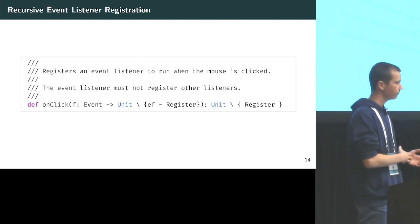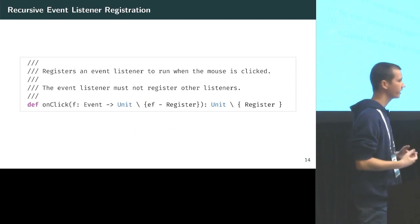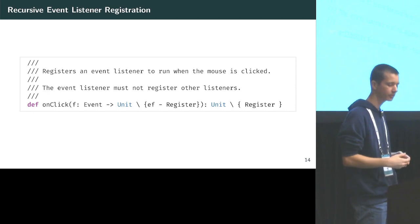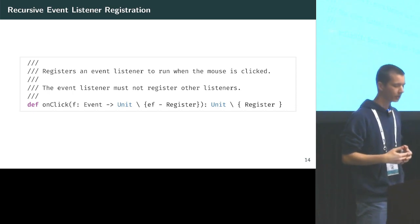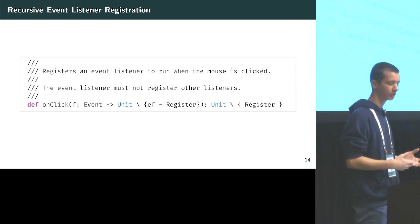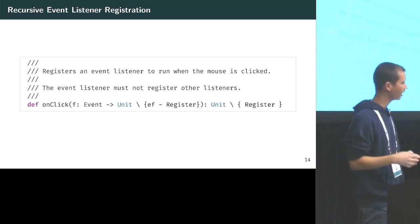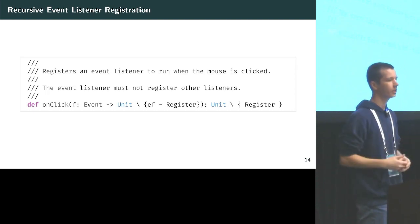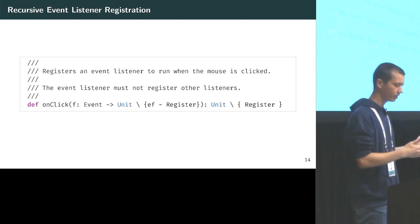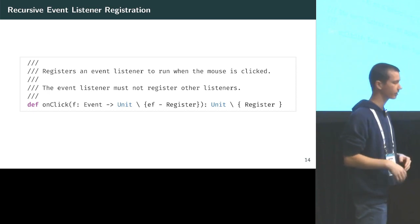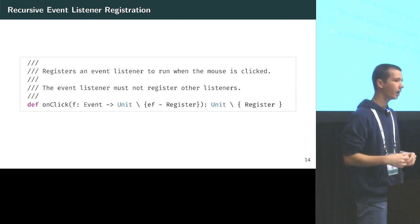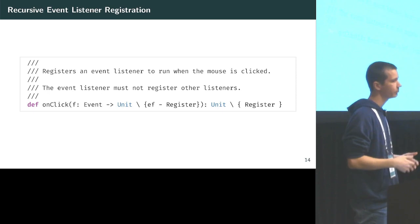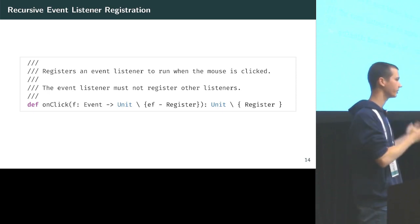As another example, we can avoid recursive event listener registration. We have an onClick function that we want to prevent from registering other event listeners. To do that, we associate the onClick function with the 'register' effect, so calling onClick always incurs the register effect. The parameter f is required to lack the register effect, meaning any function given to onClick could never possibly call onClick itself, since doing so would require the forbidden register effect.